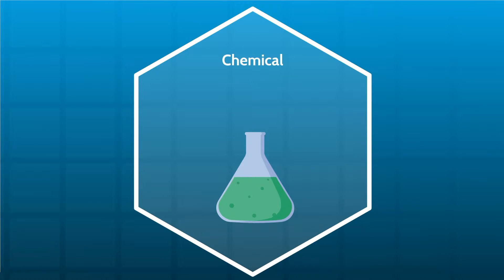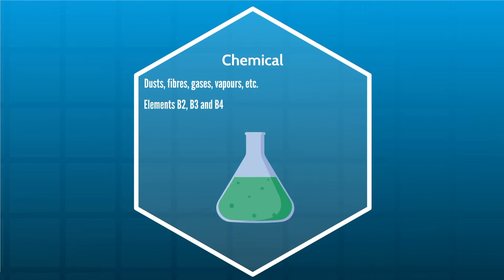Chemical — this includes dust, fibres, gases, vapours, etc., and the associated hazards. These will be dealt with in more detail in Unit B, Elements B2, 3 and 4.